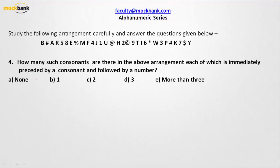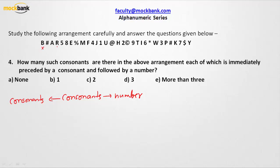Let us move to the next problem. In the same alphanumeric series, the problem asks: how many such consonants are there in the above arrangement, each of which is immediately preceded by a consonant and followed by a number? So we need consonants that are preceded by a consonant and followed by a number. Let us start looking.